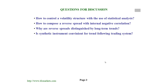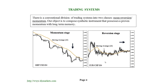We discuss a possible solution to this problem by composing a synthetic instrument that knowingly possesses trend behavior with long-term memory. In this case, a trader monitors a synthetic market structure using instruments of technical or statistical analysis. Today we focus on the following key points: how to control volatility structure with statistical analysis, how to compose a reverse spread with internal negative correlation, why reverse spreads are distinguished by long-term trends, and whether a synthetic instrument is convenient for a trend-following trading system.